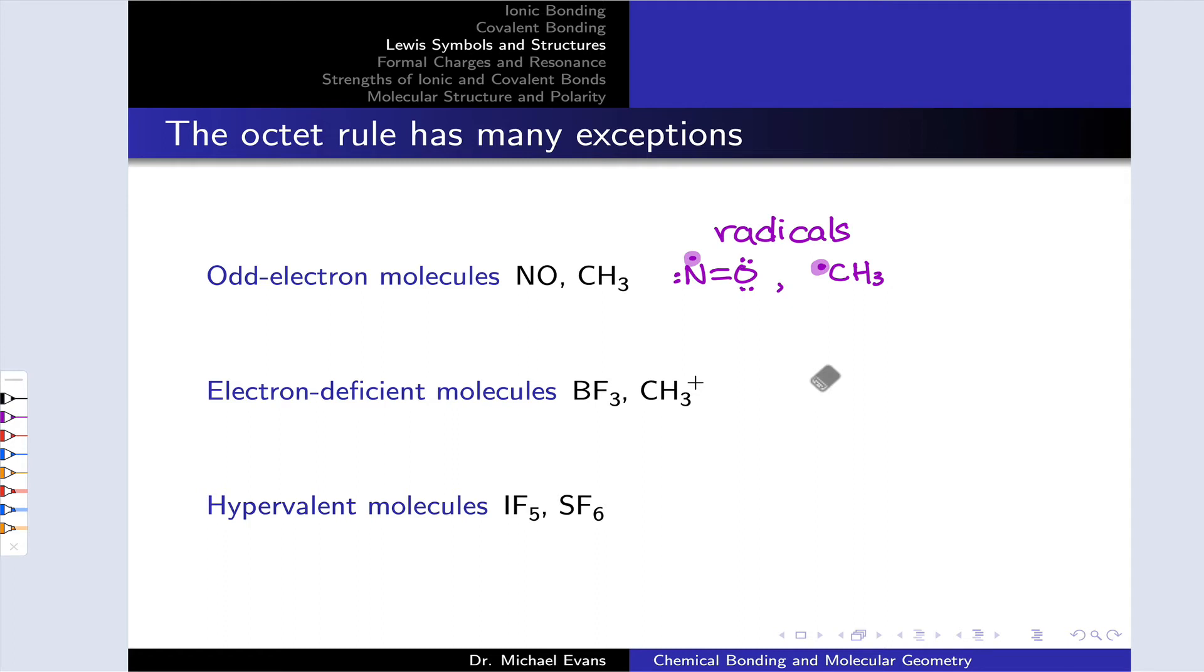Radicals tend to be unstable species, but they have been observed and they do certainly exist. We need to keep in mind that having an odd number of total electrons, while rare, is okay and is valid.